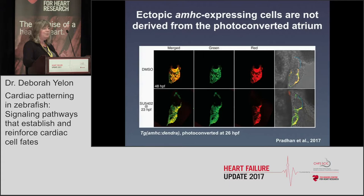In wild type, all cells expressing AMHC are in the atrium and are green and red — all derived from cells that were expressing AMHC at the time of conversion. But in SU5402-treated embryos, while atrial cells are green and red, the AMHC-expressing cells found in the ventricle are green but not red, indicating they were not expressing AMHC at the time of photoconversion. So these ectopic AMHC-expressing cells in the ventricle are not derived from cells that were originally expressing AMHC.